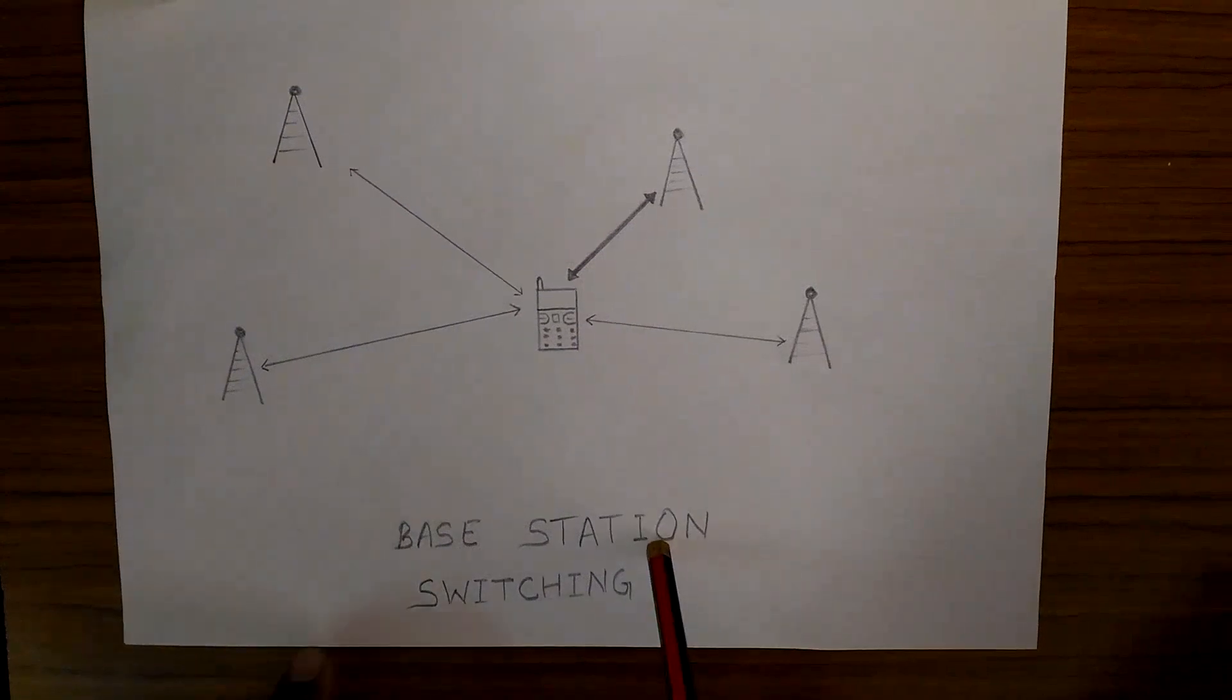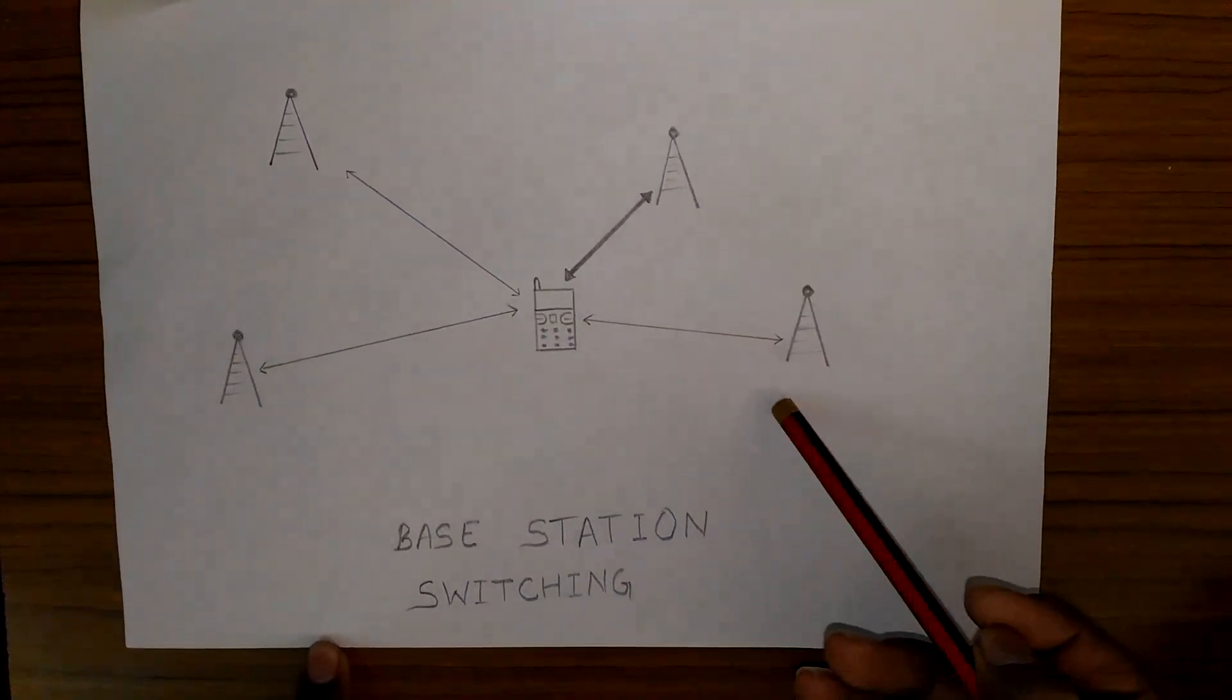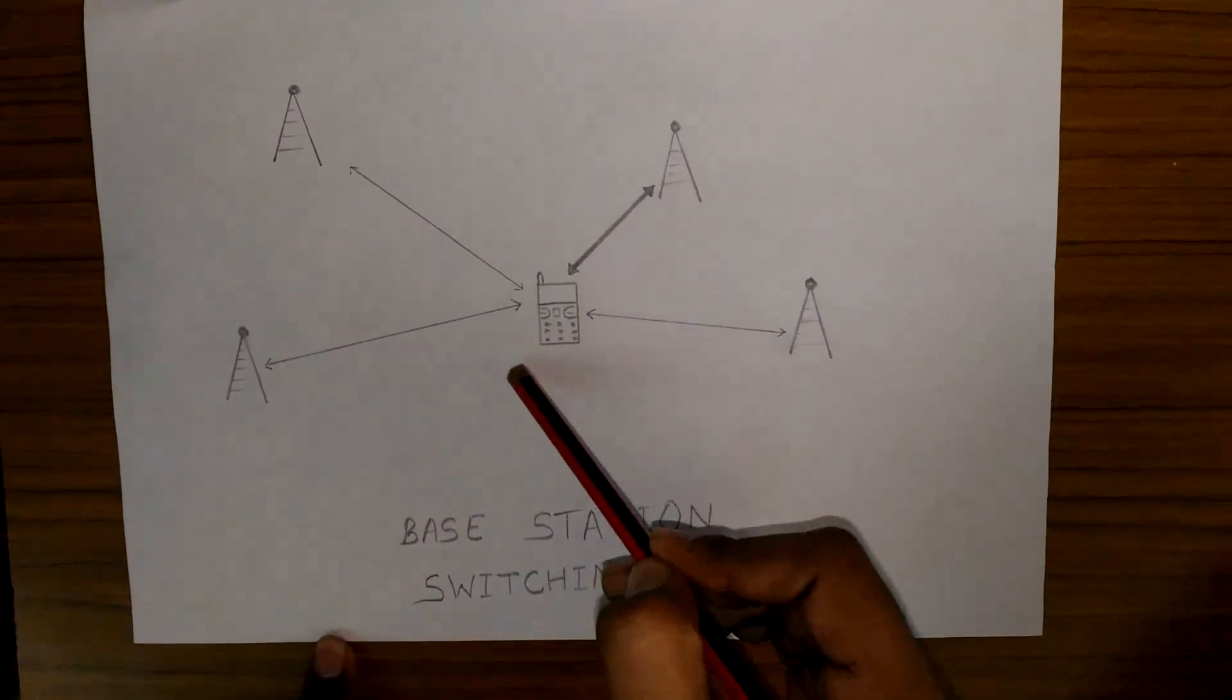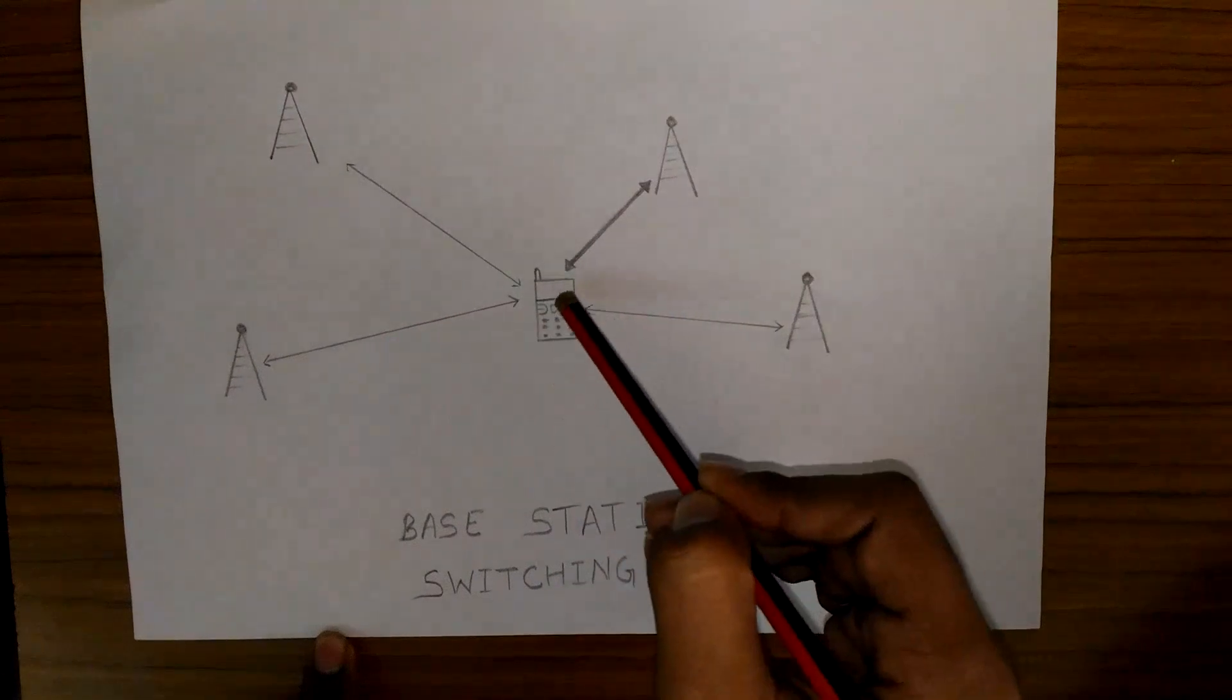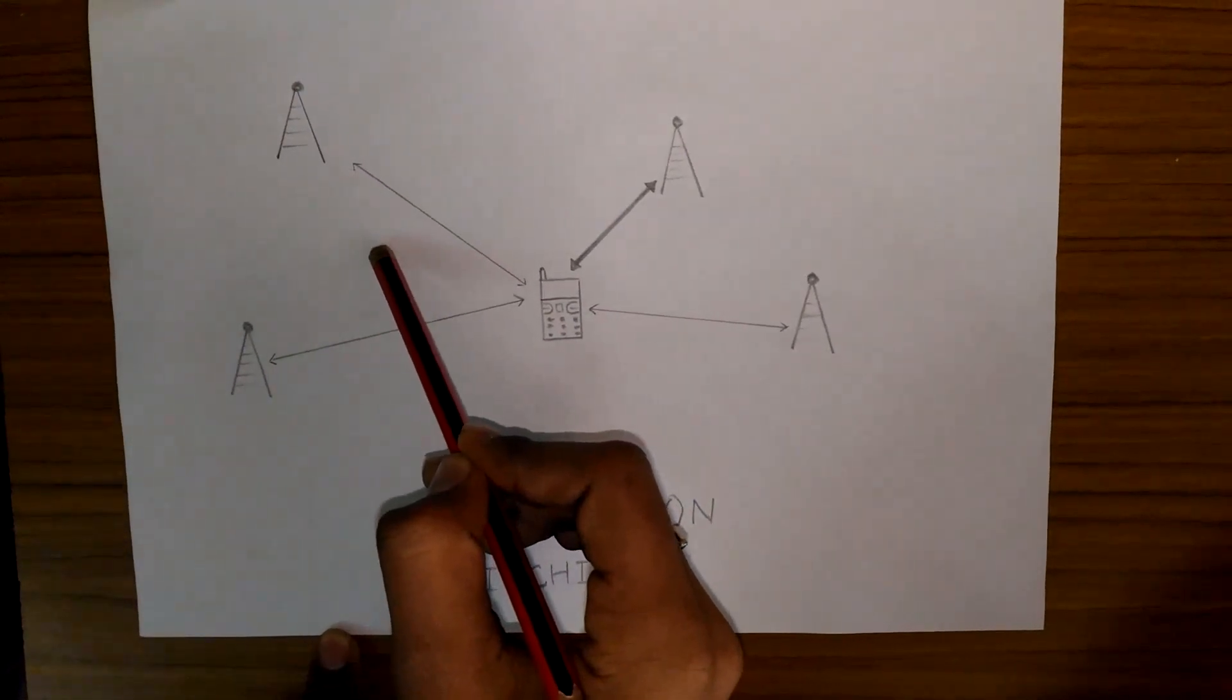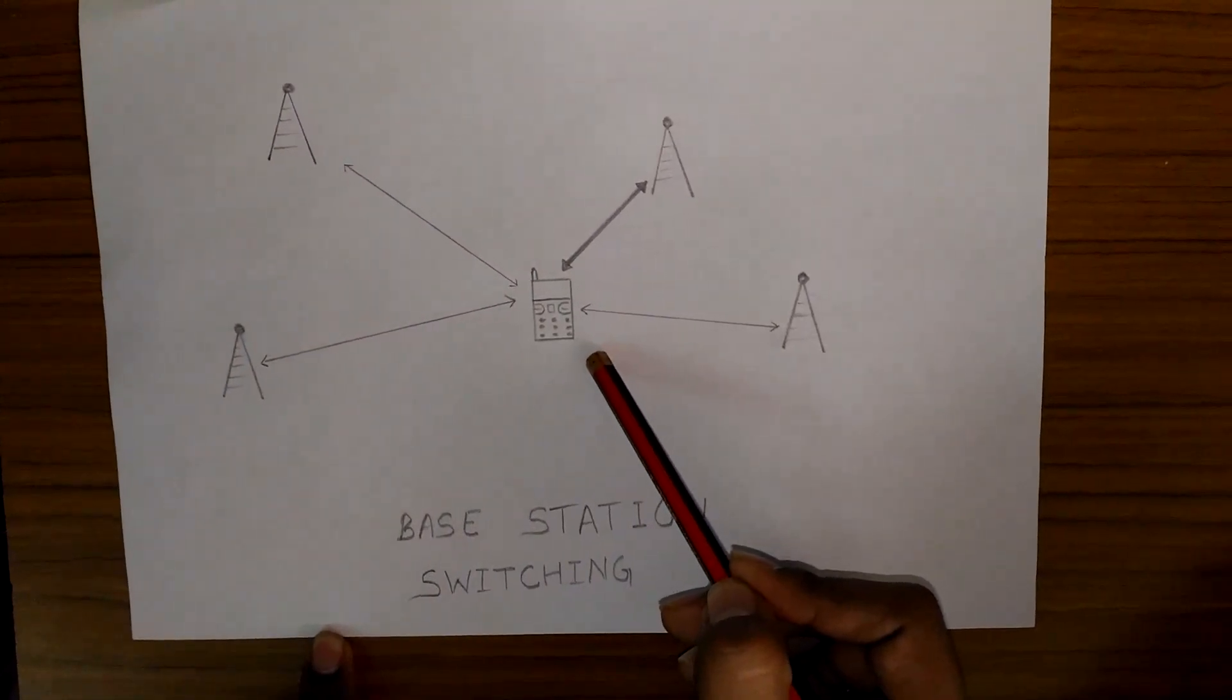Now base station switching. When we move while we talk, we have uninterrupted calling. The MSC locates where the cell phone is, keeps records of where the cell phone is going, and connects to the nearest base station that has maximum signal strength. That's how it happens. Thank you for watching the video. Hope you like it.